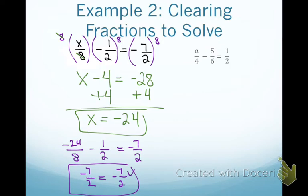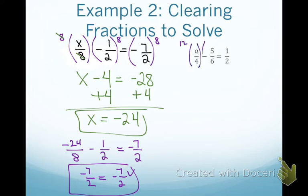For the second equation, take a minute to write it down and figure out the LCD by listing multiples of the largest denominator. The largest denominator is 6, but 4 does not go into 6, so 6 is not the LCD. Moving to the next multiple — 12: 4 goes into 12, 6 goes into 12, and 2 goes into 12. So the LCD is 12, and I'll multiply each term in the equation by 12.